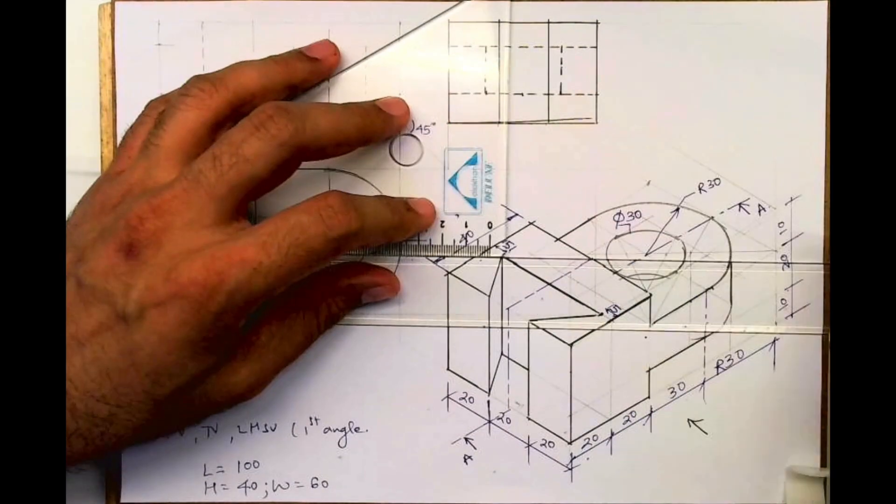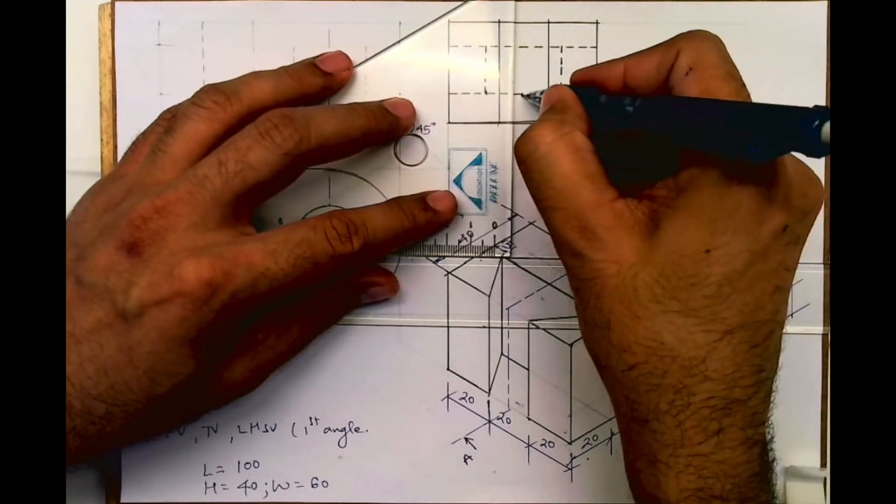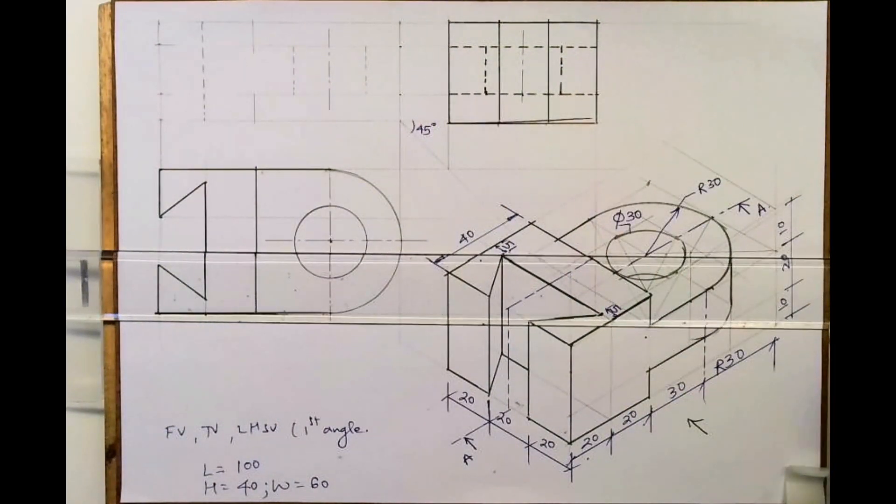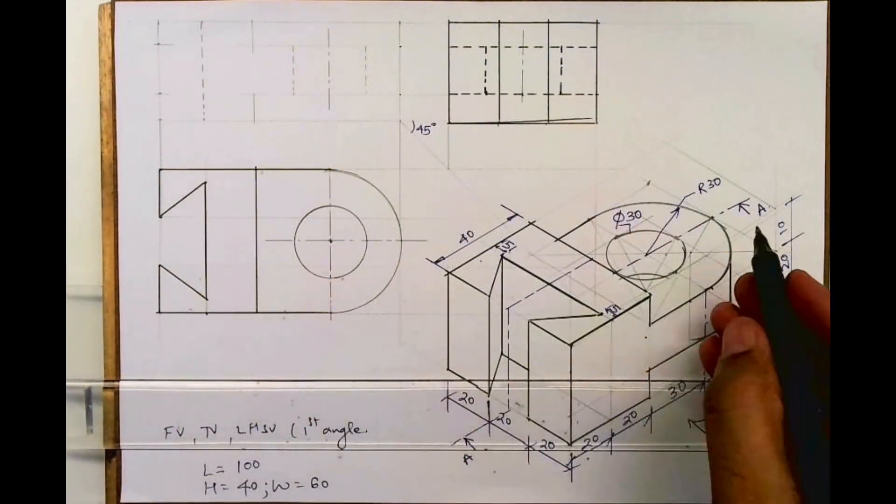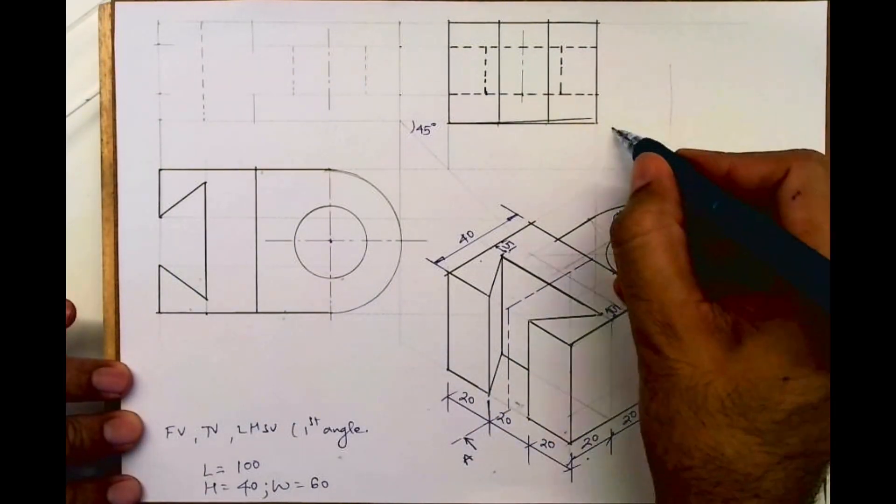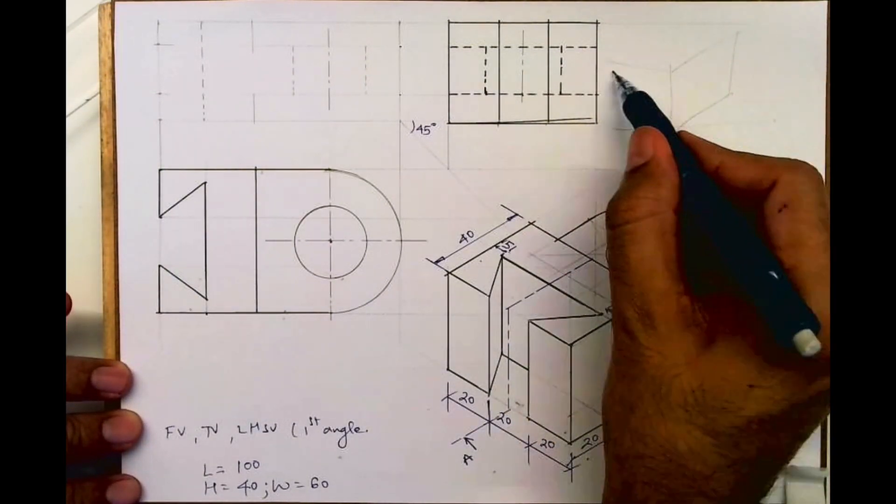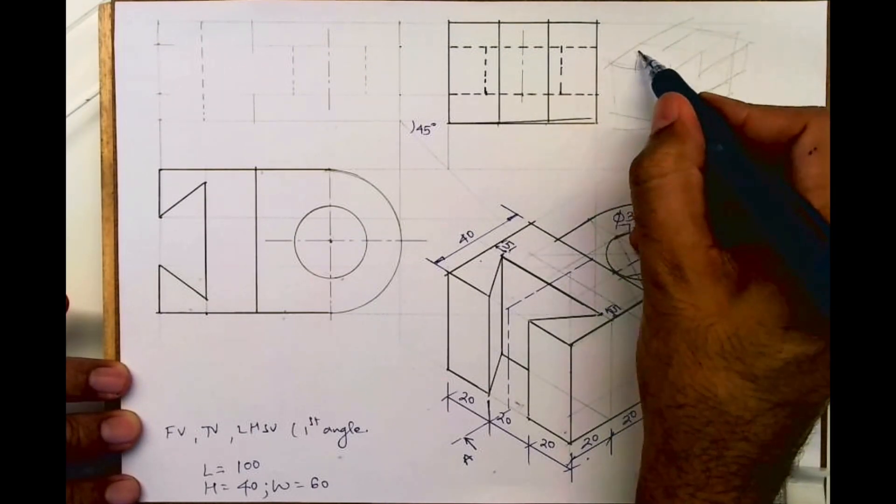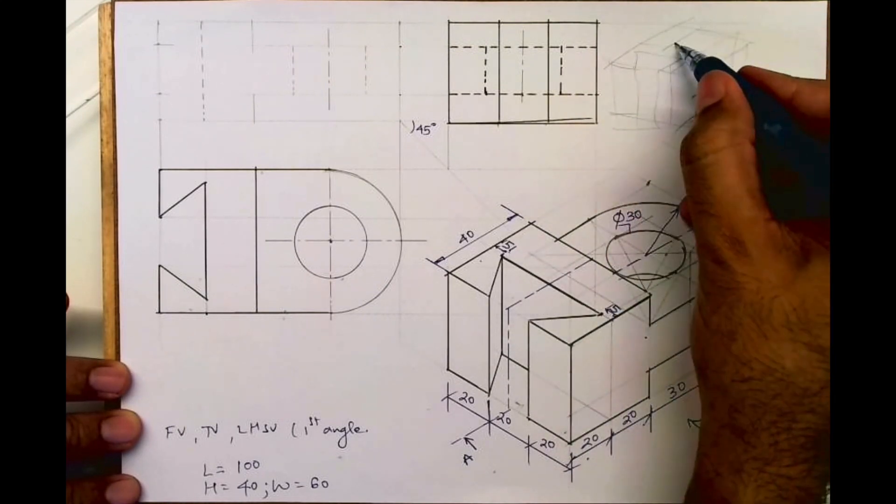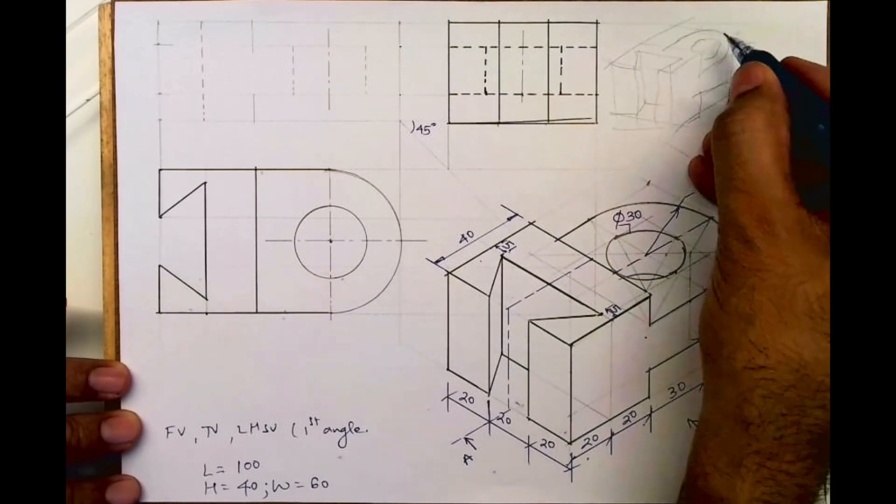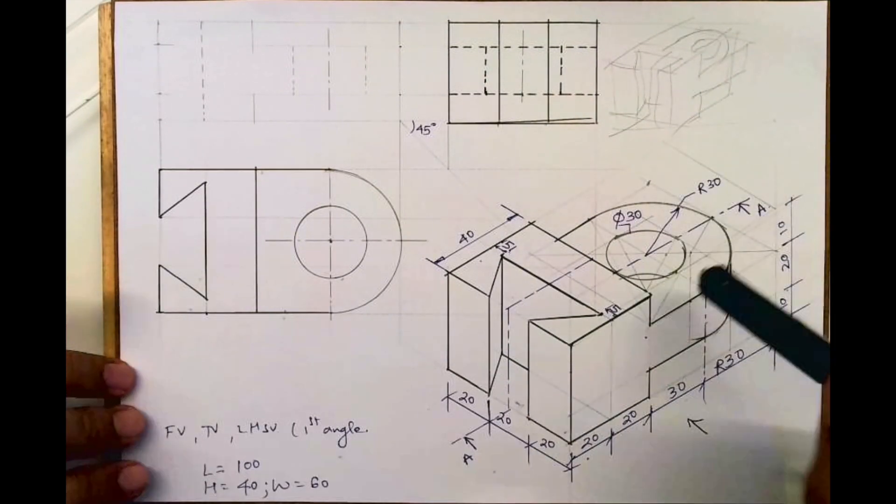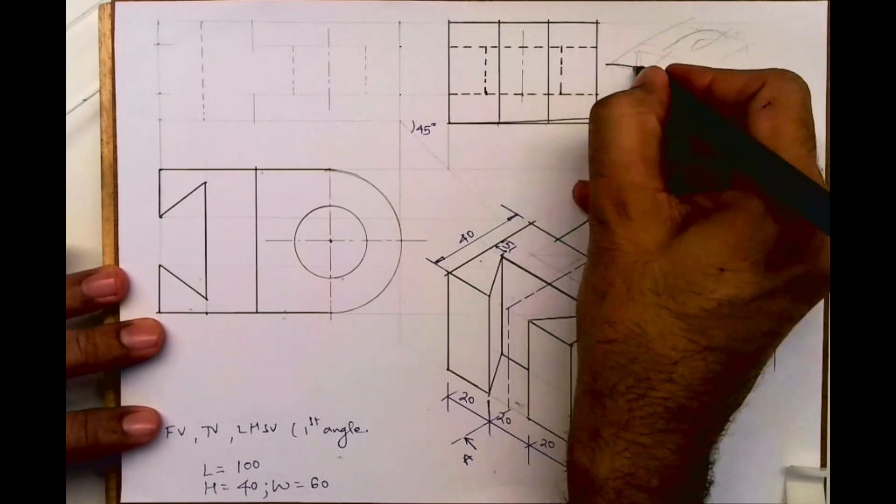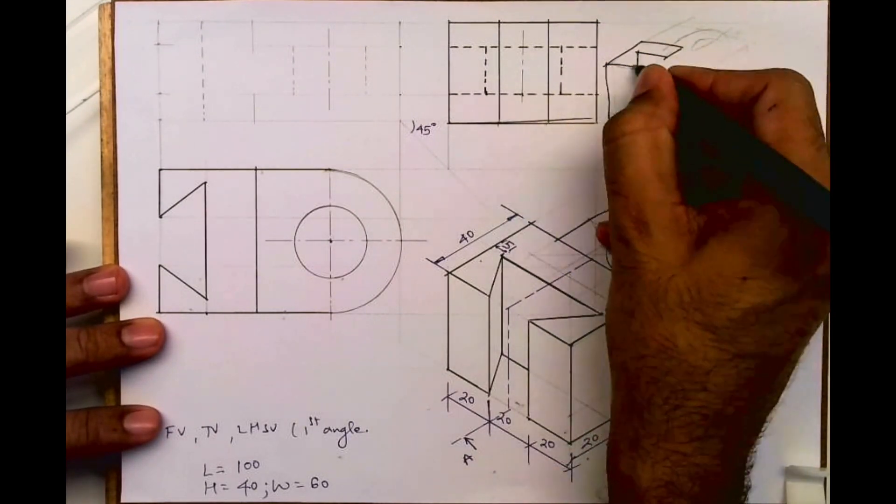Now we need to do sectional front view. Now if you see sectional front view, see top view and side view is done. Now if you see cutting plane along AA. So this is the sum. It is cut like this. So this much portion will go away. So what will be the remaining portion, it will be like this.